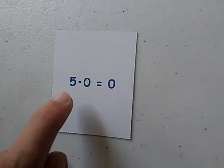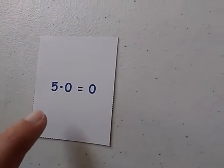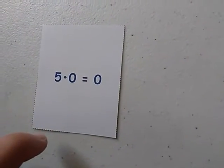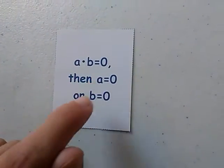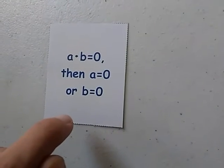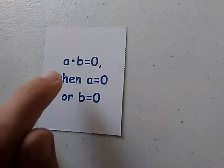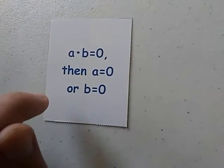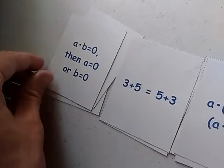Zero Product Property. Now we have 5 times 0 equals 0, because any number times 0 equals 0. So this is the Zero Product Property. A times B equals 0, then A equals 0 or B equals 0. If the product is 0, that means either one of these factors or both of them are equal to 0. So this is the Zero Product Property.